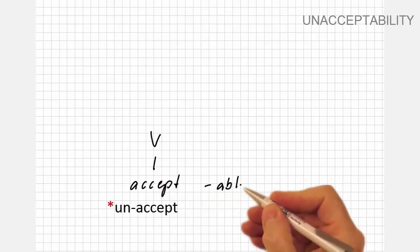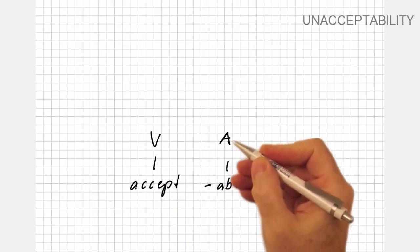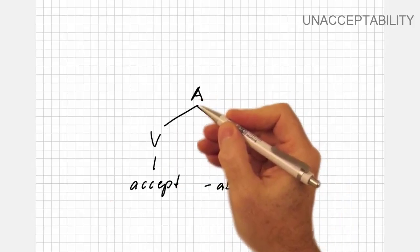Since unaccept doesn't exist, we have to attach the adjectival suffix -able, which turns the verb into an adjective first.